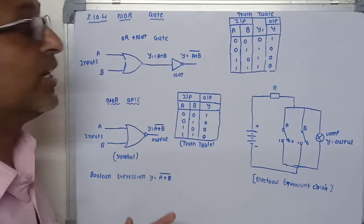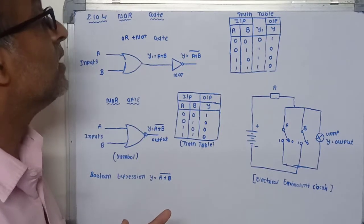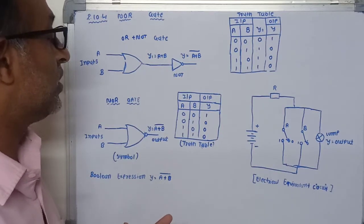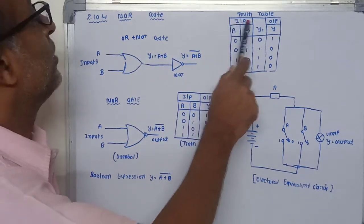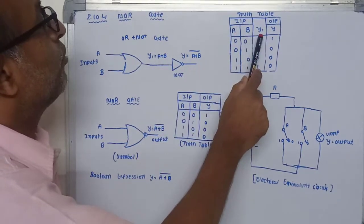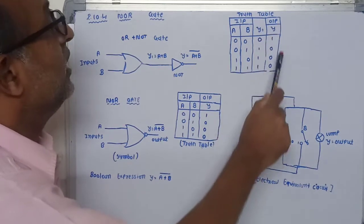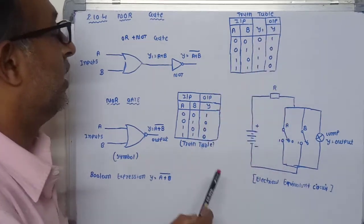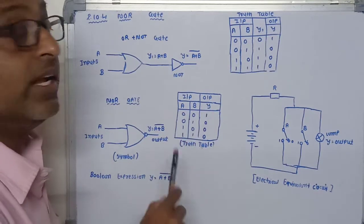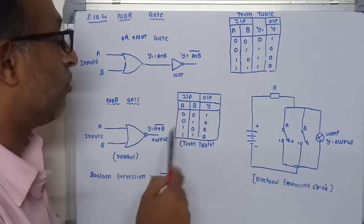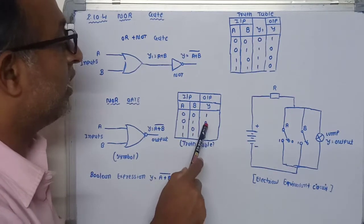The output of this NOR gate is one only when both inputs are zero. Here I can write two tables for the OR gate: the output of the OR gate is inverted by the NOR gate to get the final output. When both inputs are zero, output is one. When any input is one or both inputs are one, the output of the NOR gate is zero.